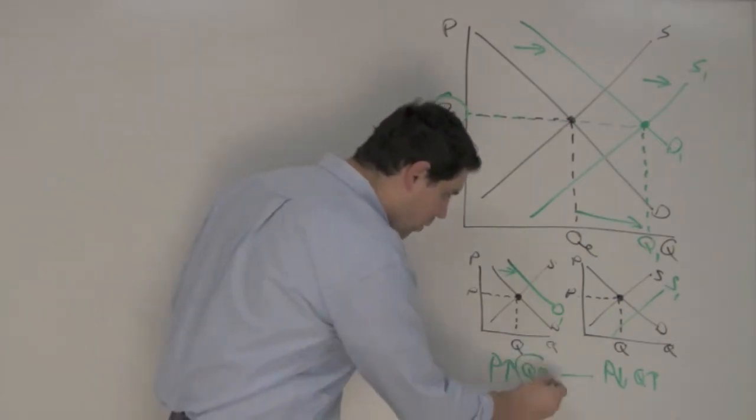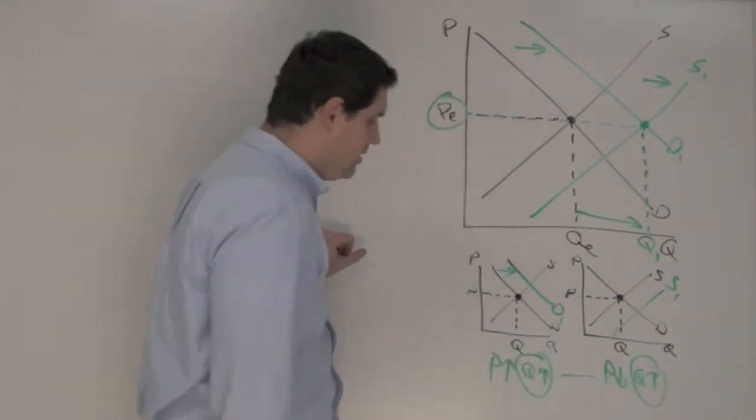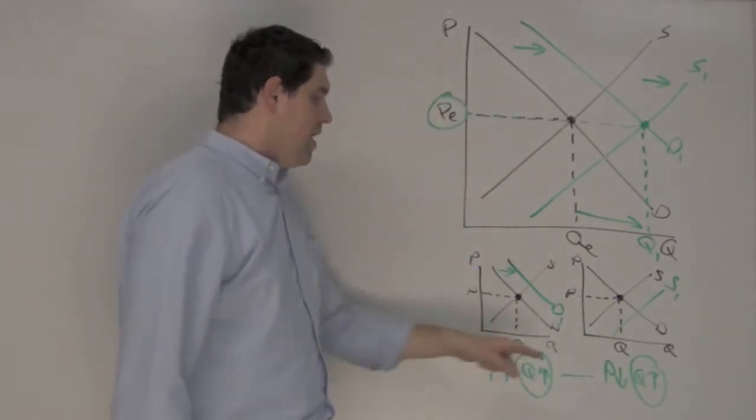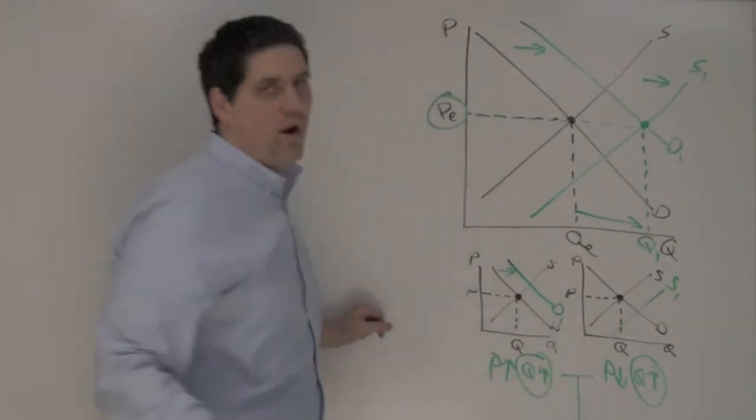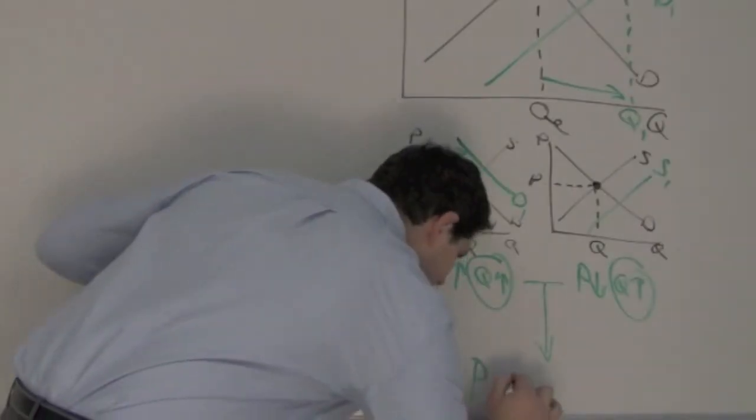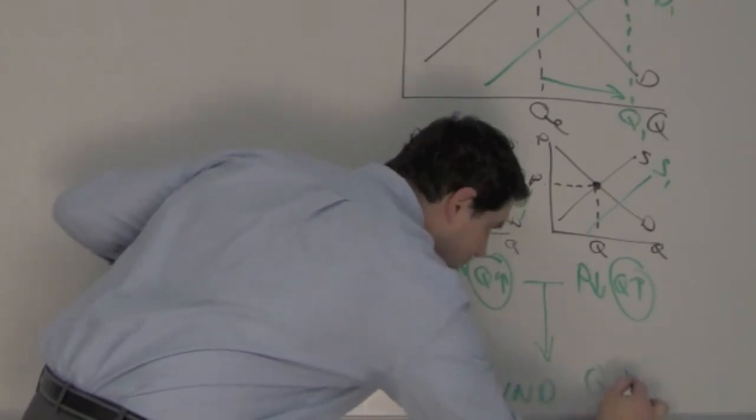What are you going to get? Well, quantity no matter what is definitely going to increase. But in this situation, price goes up. In this situation, price goes down. The end result is what I already told you. Price is indeterminate. Quantity went up.